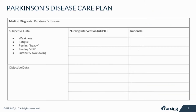Let's look at the subjective data for the Parkinson's disease care plan. The patient is going to experience weakness, fatigue, and difficulty swallowing. They might feel heavy or really stiff. This is all due to the lack of controlled movement because of the lack of dopamine in the brain.